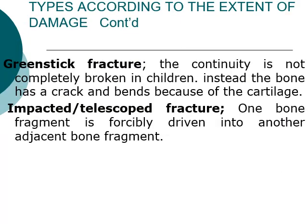A green stick fracture is similar to an incomplete fracture. It only happens in children, because children's bones are still more cartilaginous. Because of that cartilage tissue, the bone only bends and can crack on one side. In a green stick fracture there is a bend and there may also be a crack, but there is no complete fracture. An impacted or telescoped fracture is where the bone is broken and one part goes inside the other part of the broken bone.